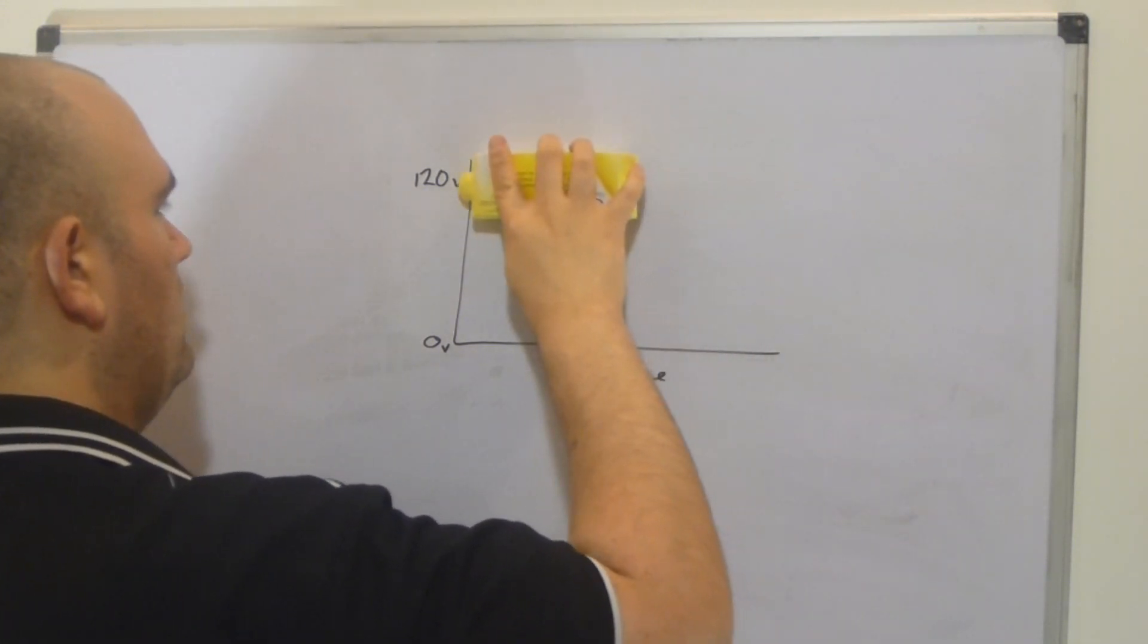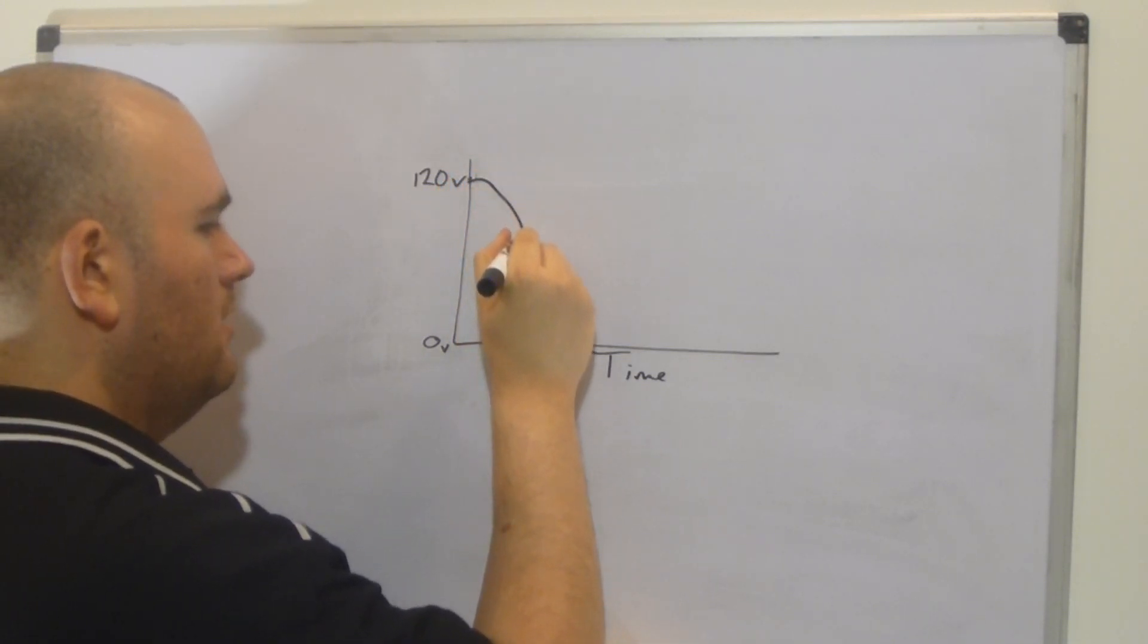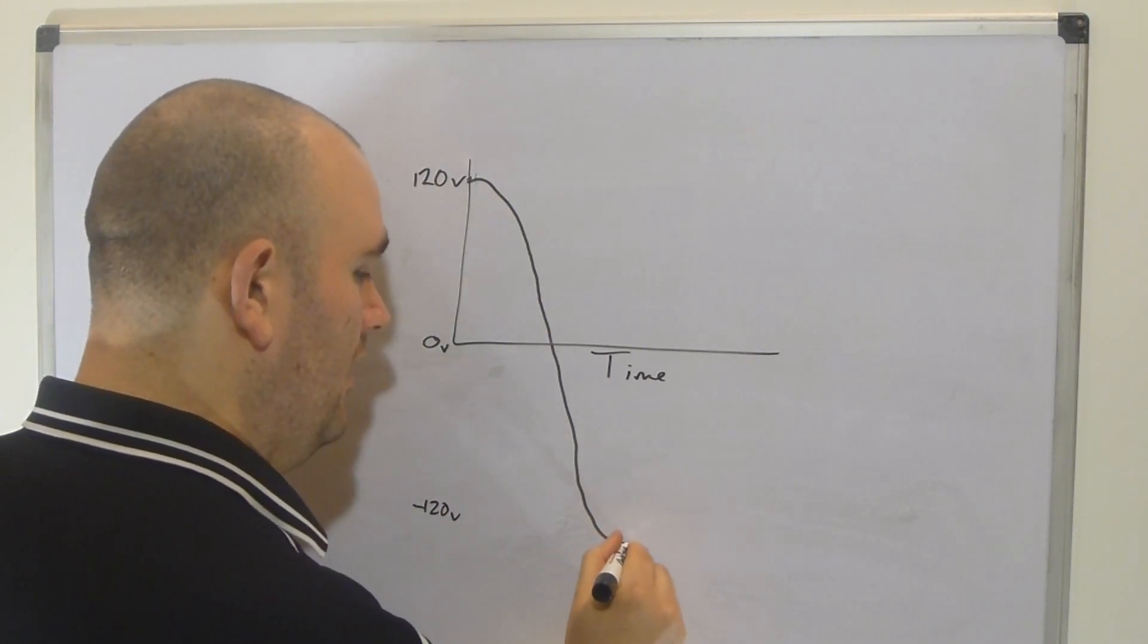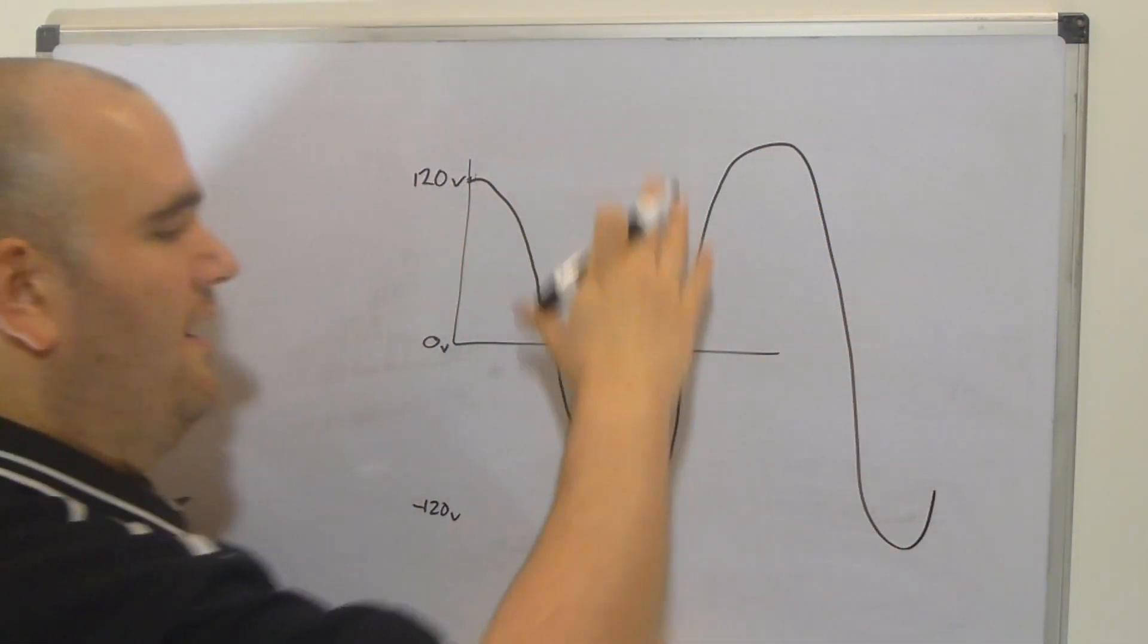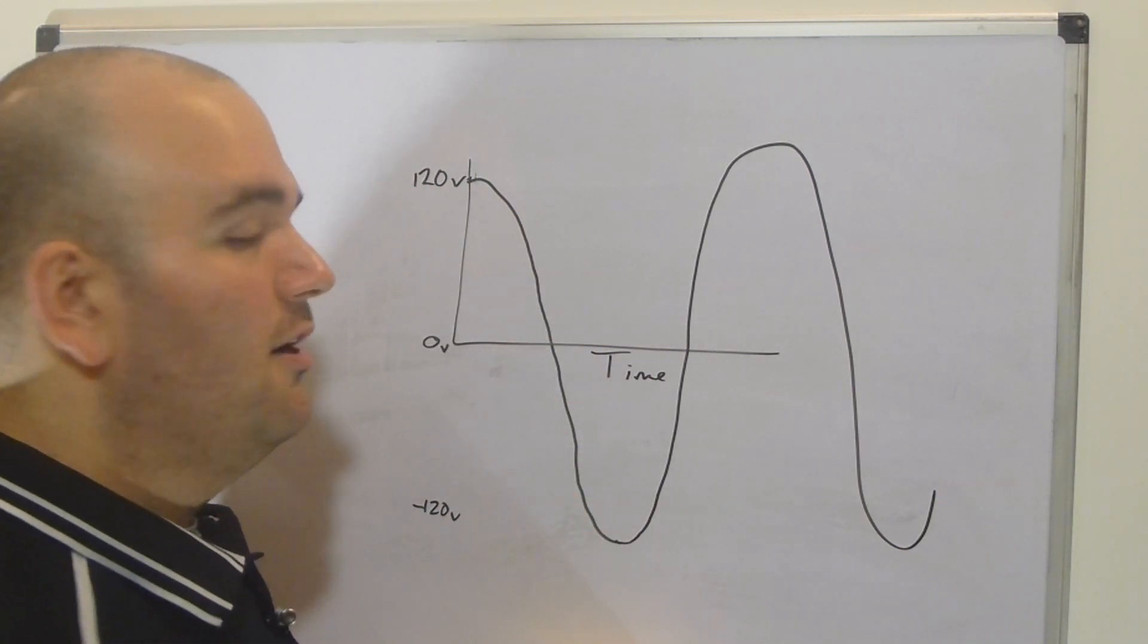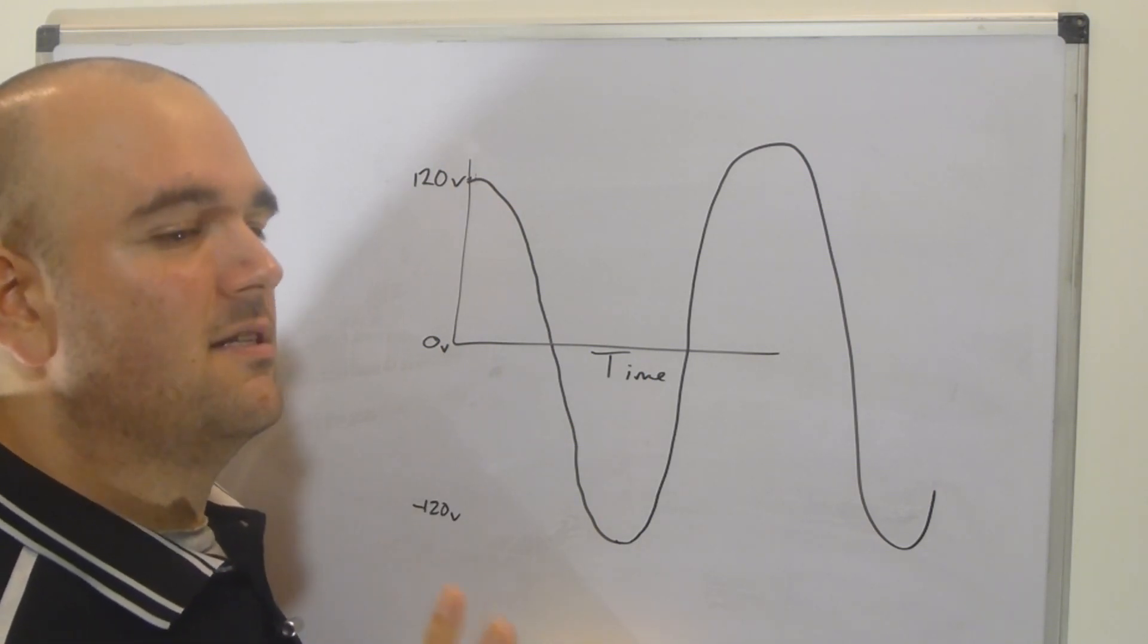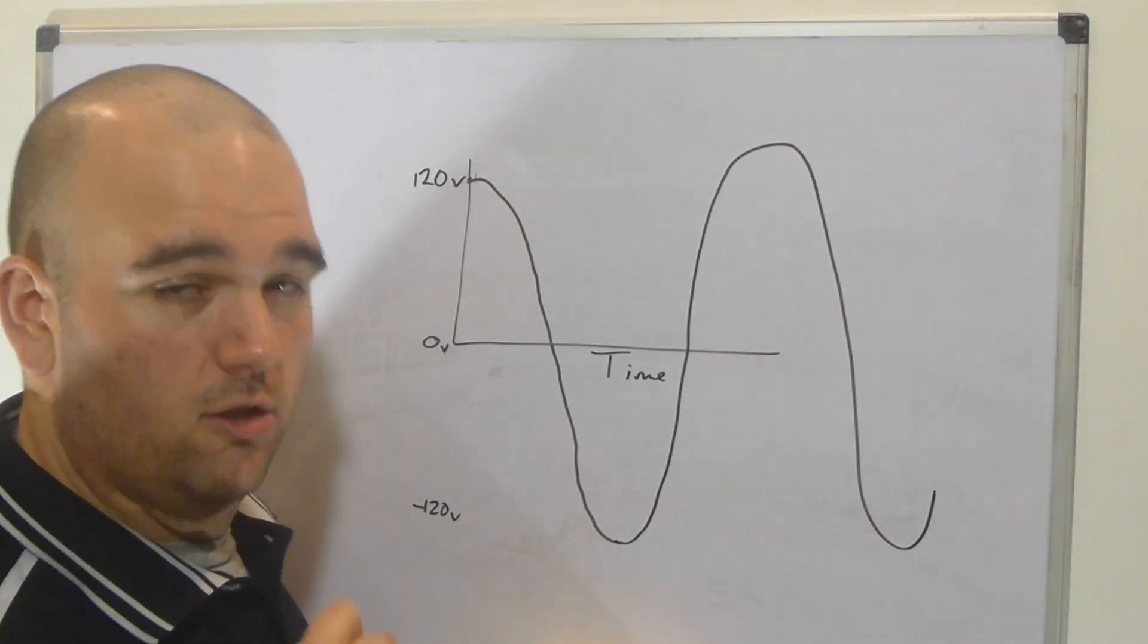But alternating current goes 120 volts, but then it drops. It drops, and it drops to zero, and it keeps dropping all the way to negative 120 volts. And then it comes back up. And then it goes back down, and it creates this wave pattern. Going from 120 all the way to zero, and all the way to negative 120. Now, if you want to do a deep dive on AC versus DC, and I think you should, it's very interesting. You can see some great stuff. Thomas Edison and Nikola Tesla had a famous public war about which one was better. Ultimately, alternating current won.